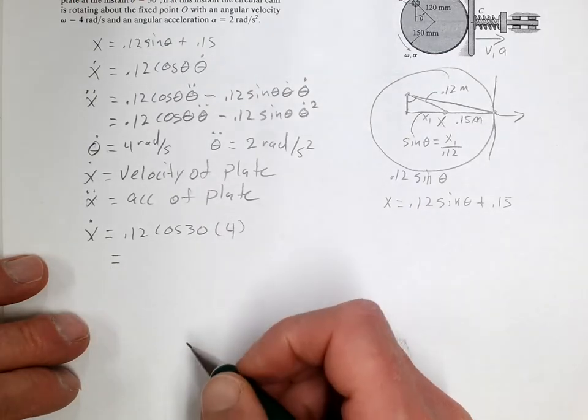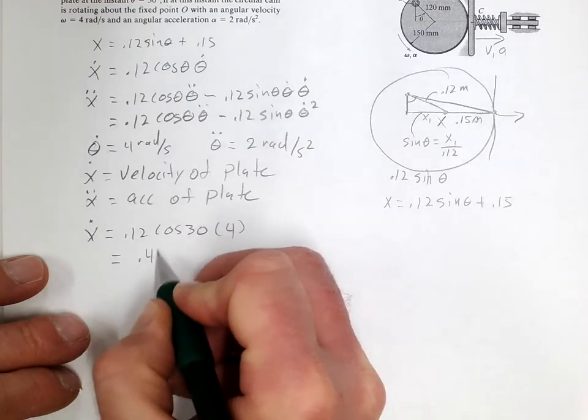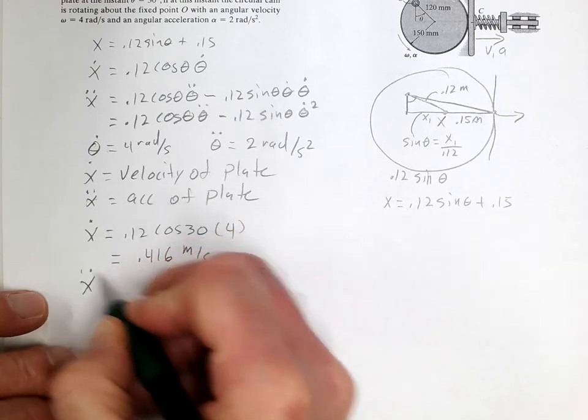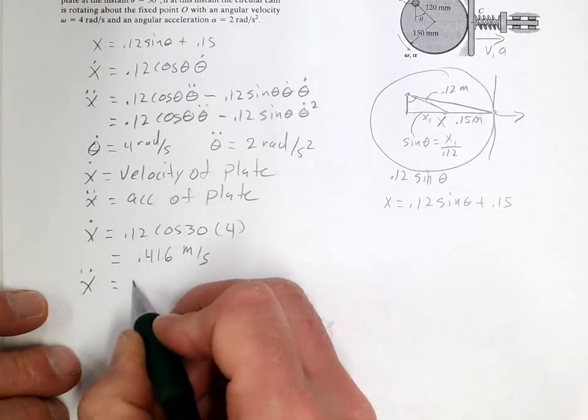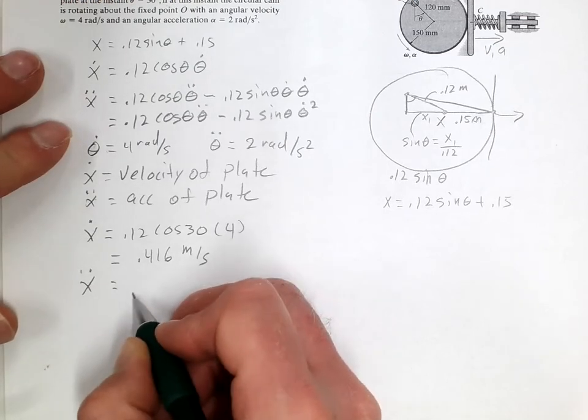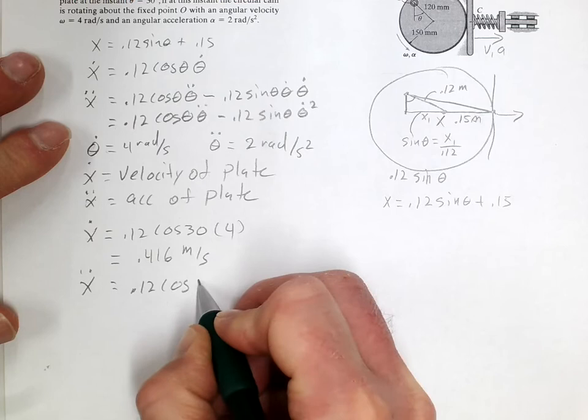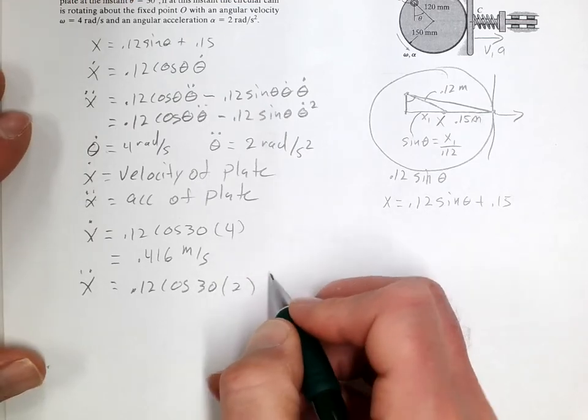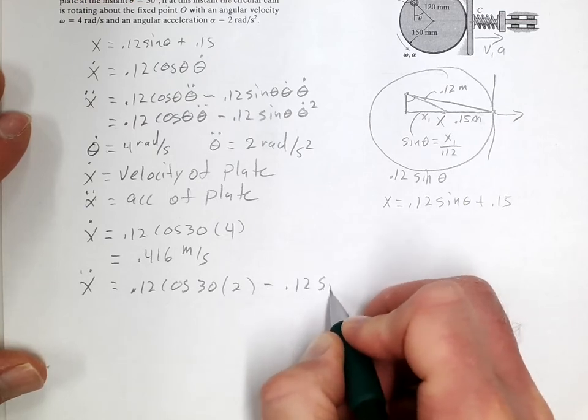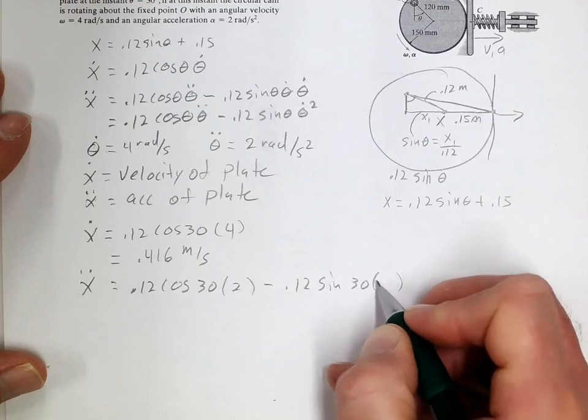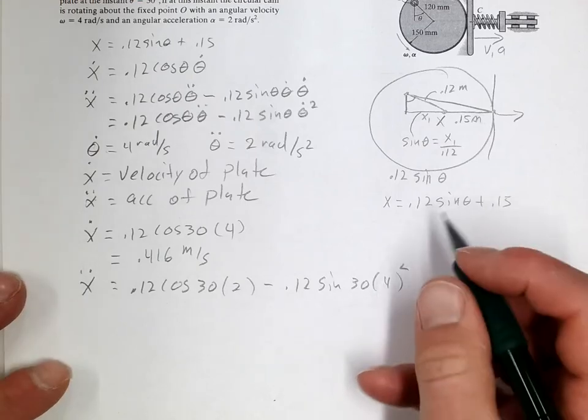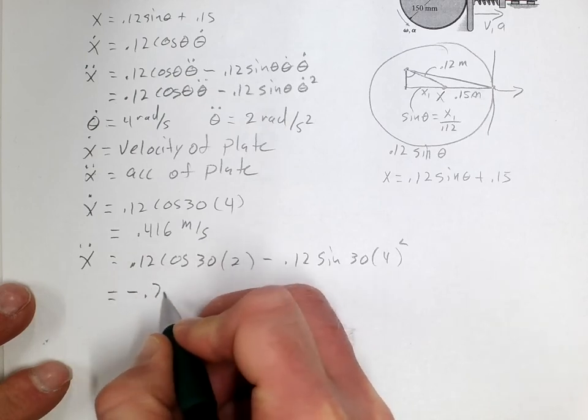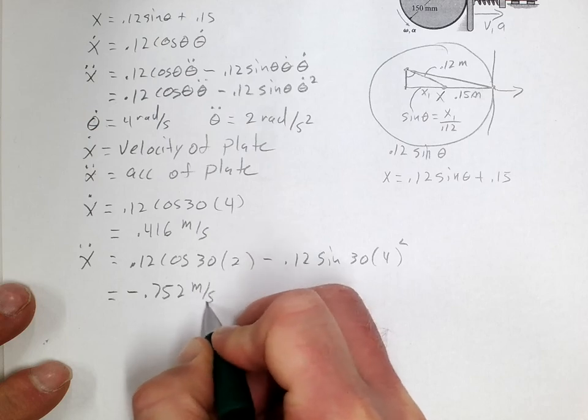X double dot is equal to 0.12 cosine of 30 times 2 minus 0.12 sine of 30 times 4 squared. And that is equal to negative 0.752 meters per second squared.